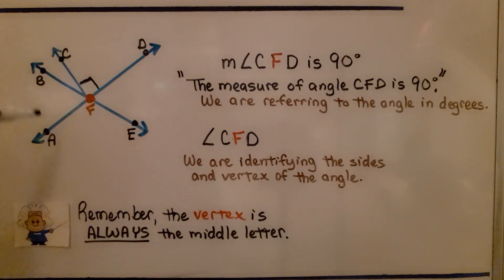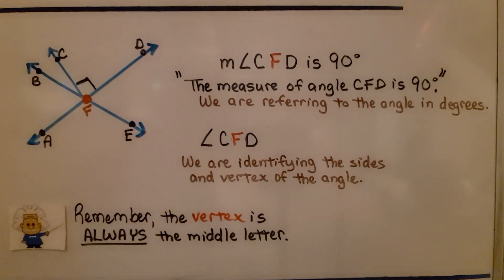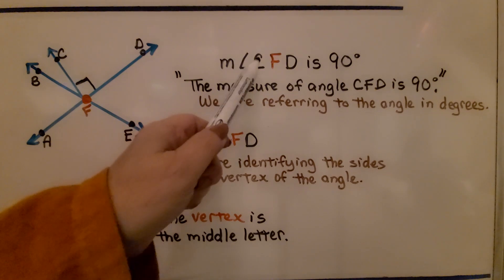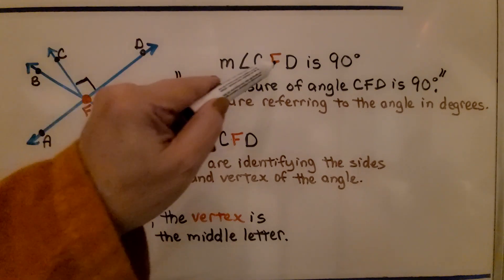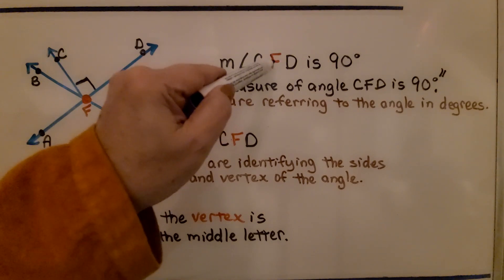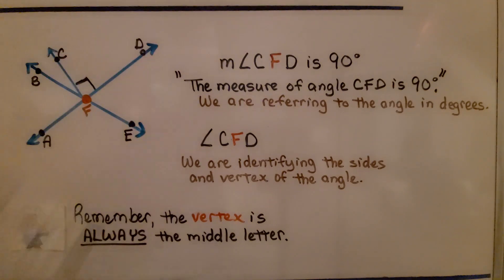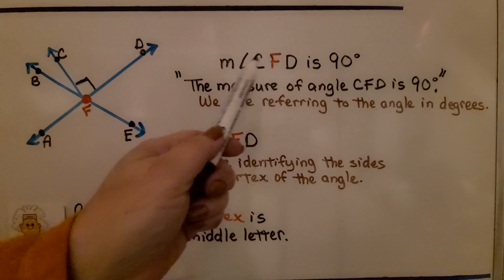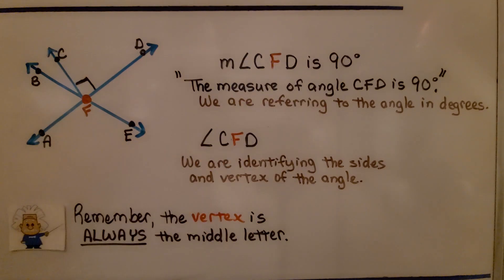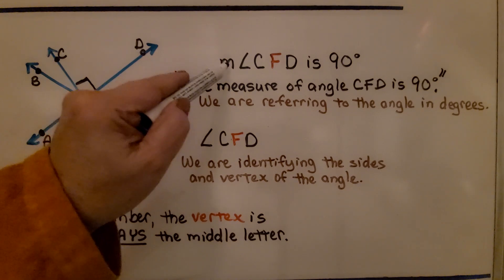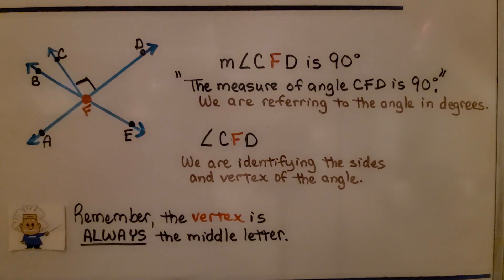Take a look at this diagram — it's very similar to the one we just had. When we see an m followed by the angle symbol and then the points, the center point is the vertex. So the measure of angle CFD is 90 degrees. When we see the m, we're referring to the angle in degrees. If we just saw angle CFD without the m, we're identifying the sides and vertex of the angle. Remember: when the little m is present, that indicates the measure in degrees, and the vertex is always the middle letter.